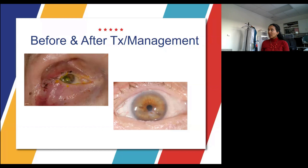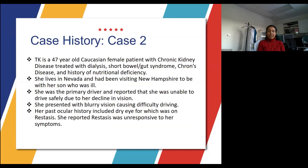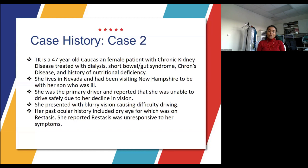Case number two is a 47-year-old Caucasian female with chronic kidney disease treated with dialysis. She also had short bowel syndrome and a history of nutritional deficiency. She lived in Nevada but had been visiting the area due to her ill son. She was the primary driver and reported she was unable to drive safely because of a significant decline in vision. Her past ocular history included dry eye for which she was on Restasis, but Restasis was unresponsive to her blurry vision and dry eye symptoms.